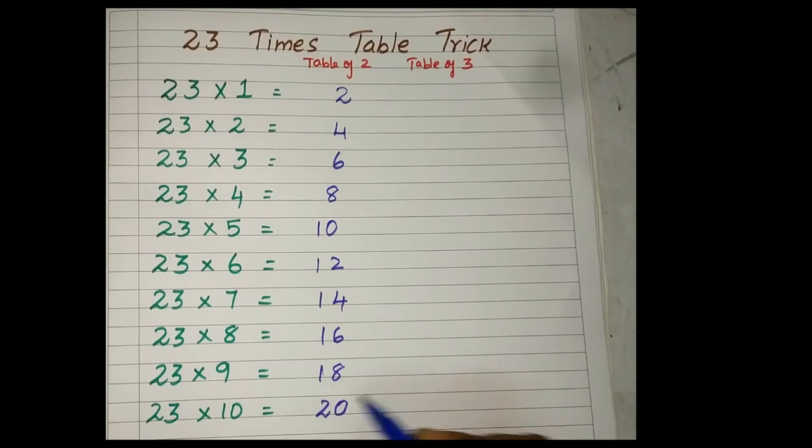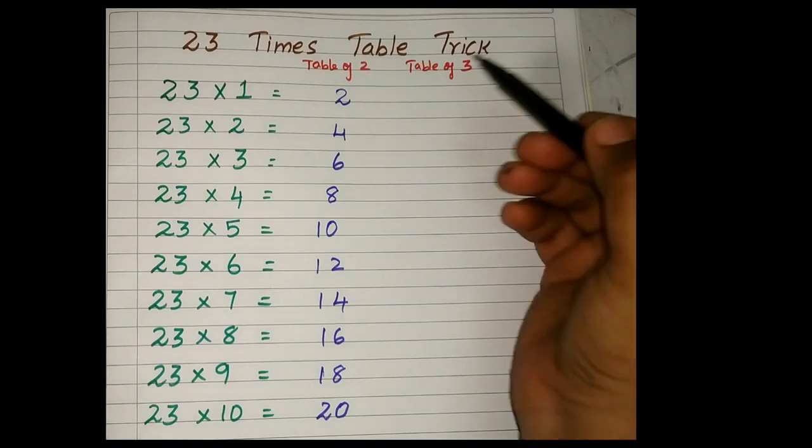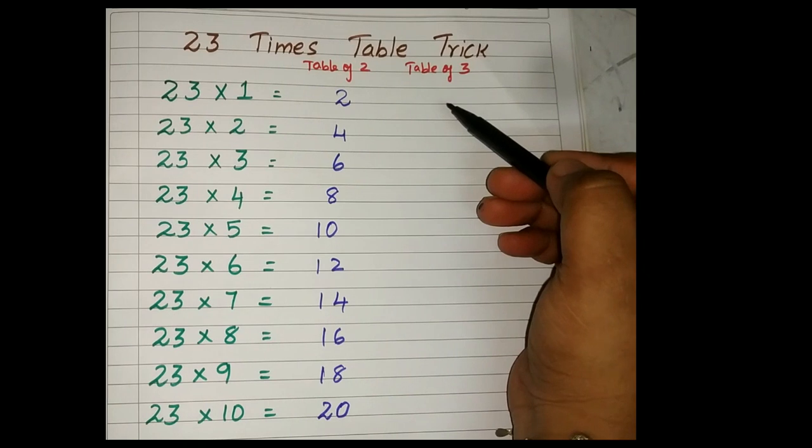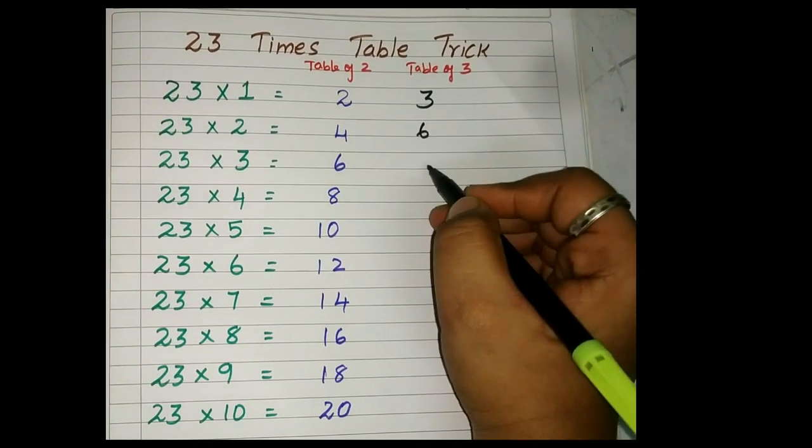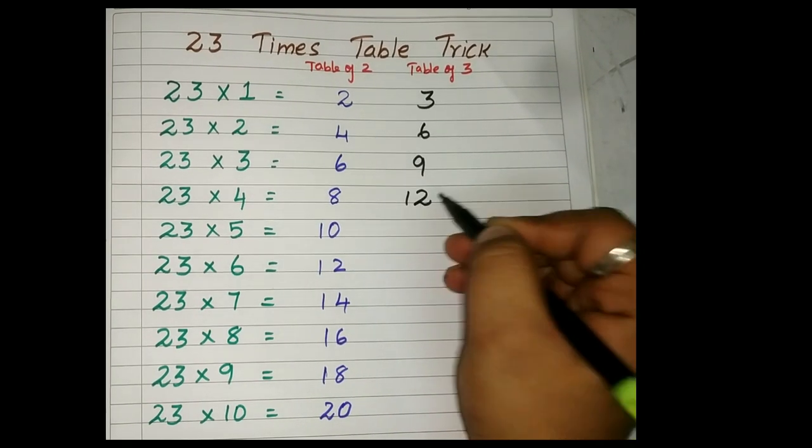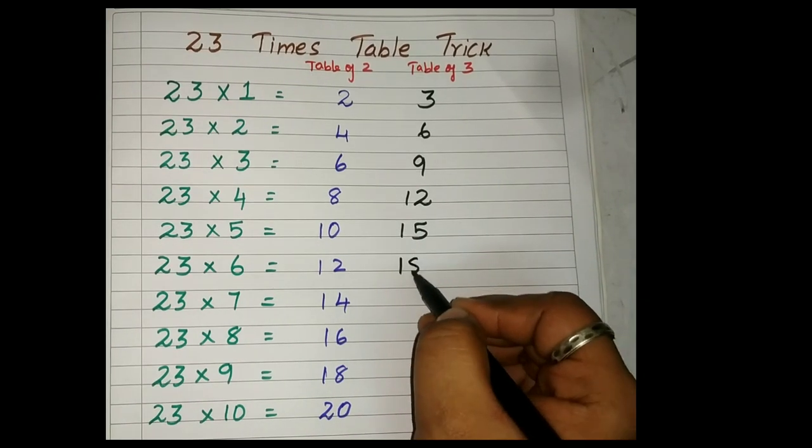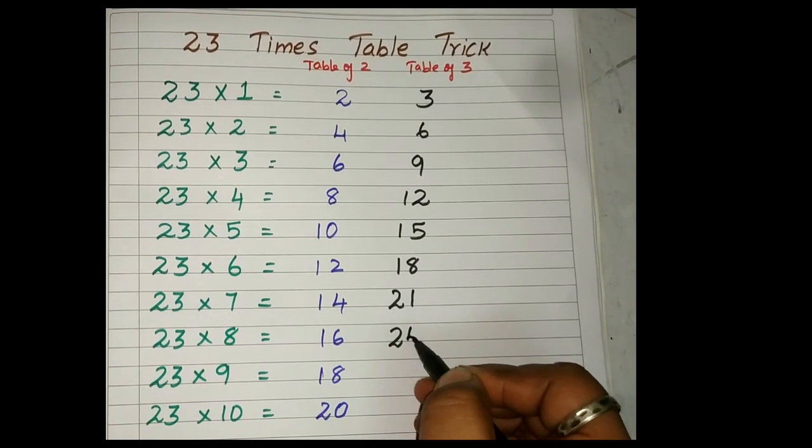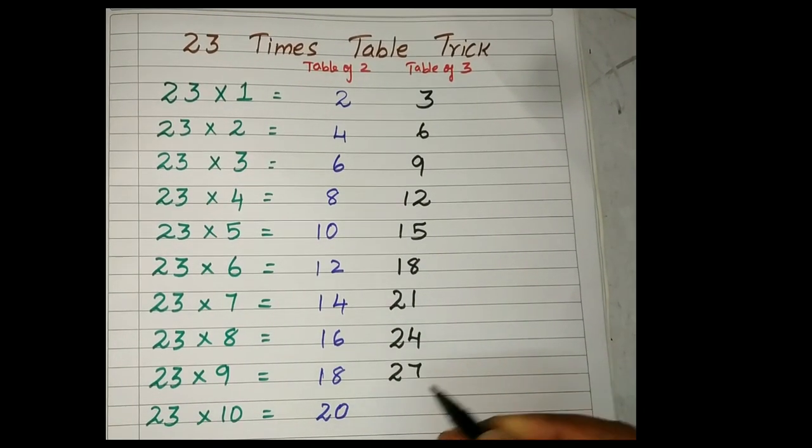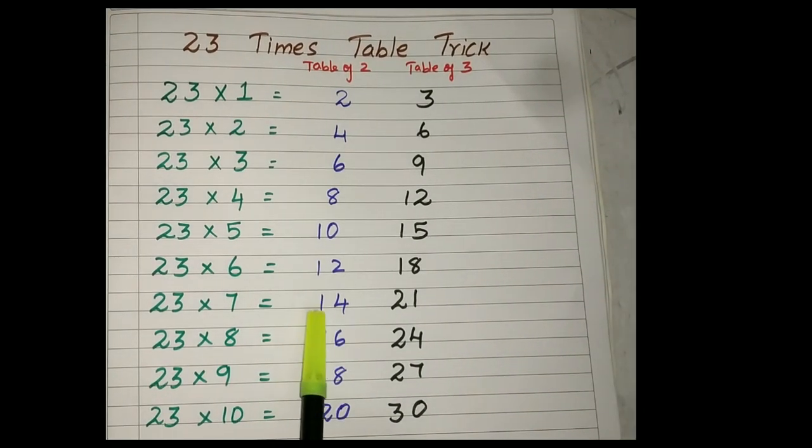2 nines are 18, 2 tens are 20. Here I have written times 2 times table, right? The second step, what you have to do, you have to write the product of 3 tables: 3 ones are 3, 3 twos are 6, 3 threes are 9, 3 fours are 12, 3 fives are 15, 3 sixes are 18, 3 sevens are 21, 3 eights are 24, 3 nines are 27, and 3 tens are 30.